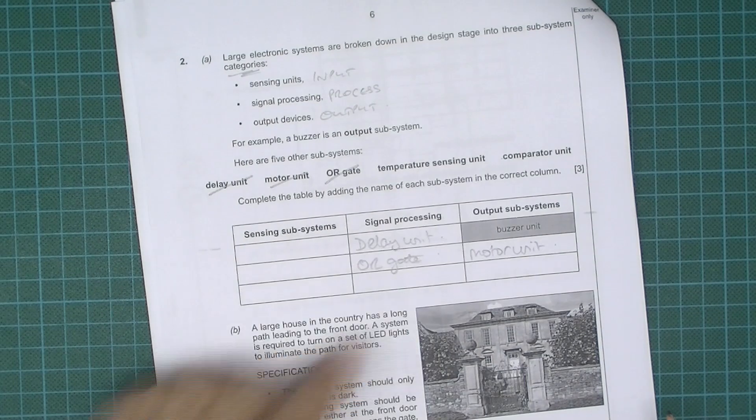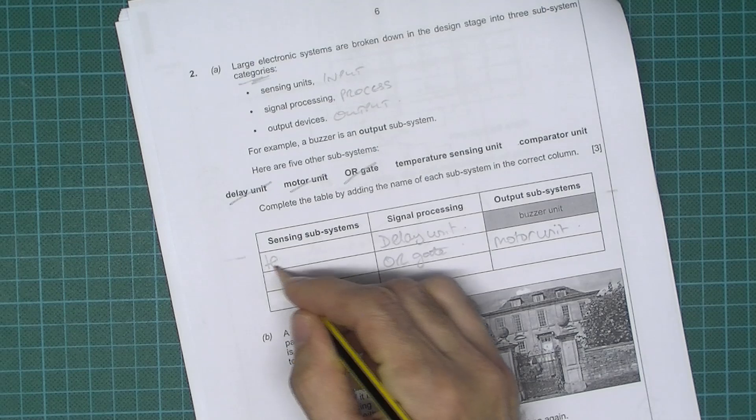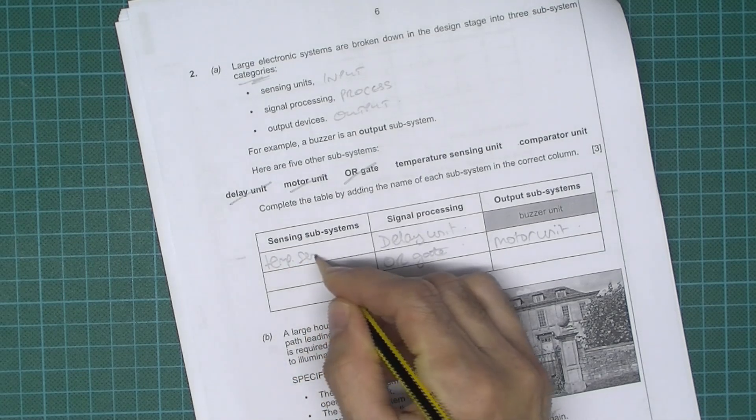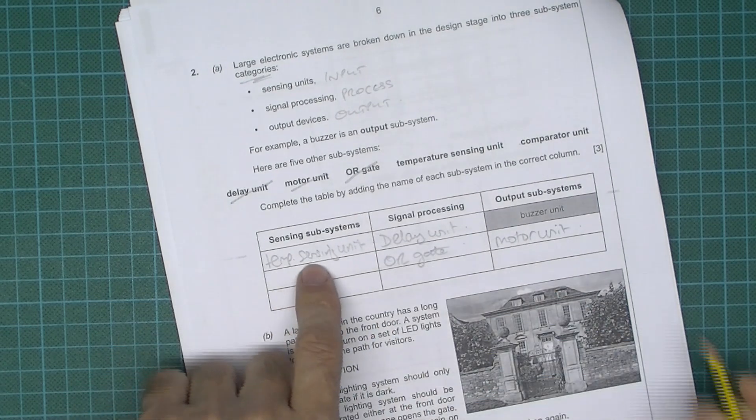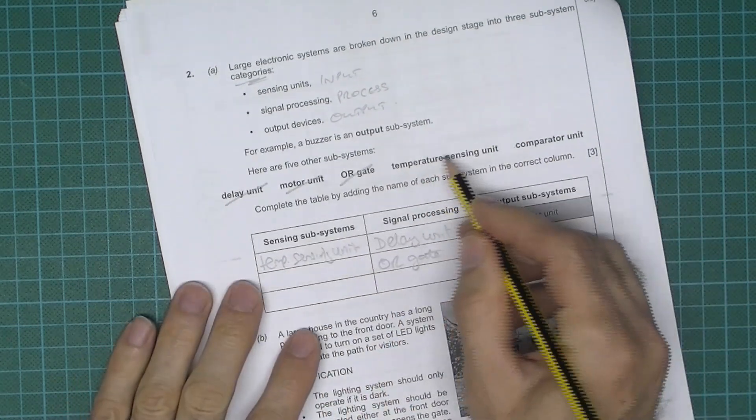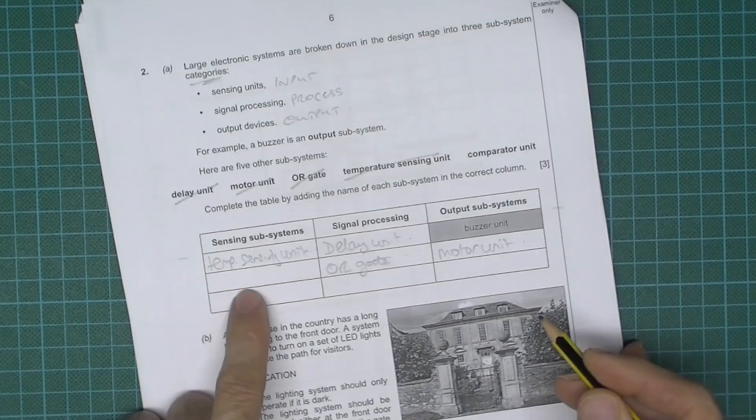A temperature sensing unit, hopefully you understand that immediately as being an input. Notice I've written temp sensing unit. I mean really you should write temperature sensing unit but they just don't give enough room, do they really. I'm sure that'll be fine.